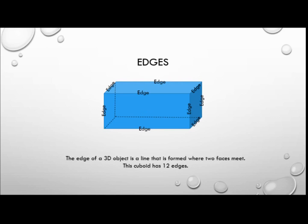The edge of a 3D object is a line that is formed where two faces meet. So this cuboid has twelve edges, nine of which are clearly visible in this picture. The other three are hidden and I've used dotted lines to show where they are.